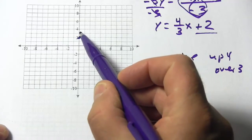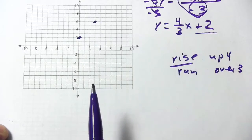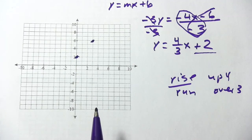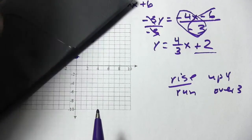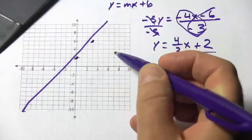So let's do that. We'll go up 1, 2, 3, 4. And over 3 should put us right there. Now we've got our 2 points. We can get out our straight edge and draw our line.